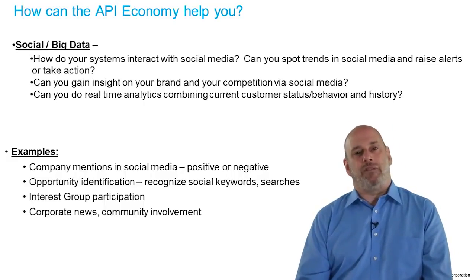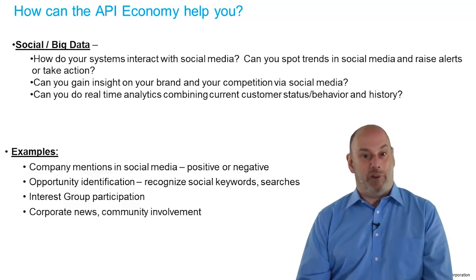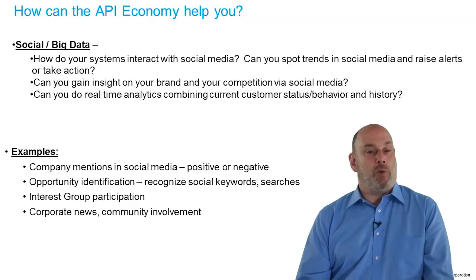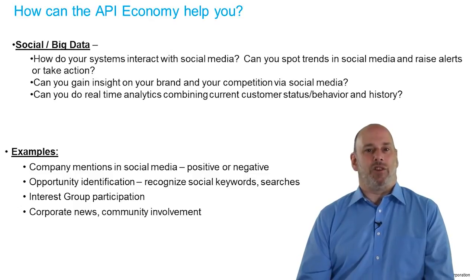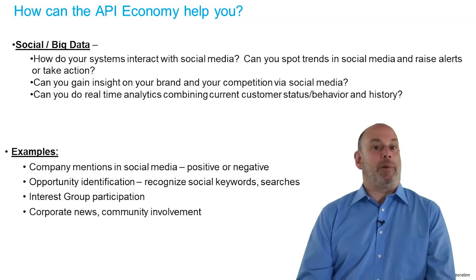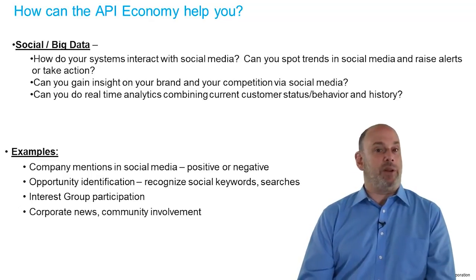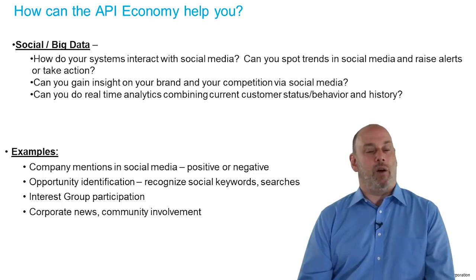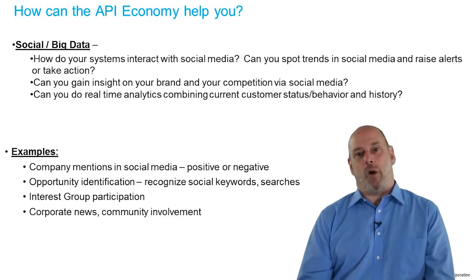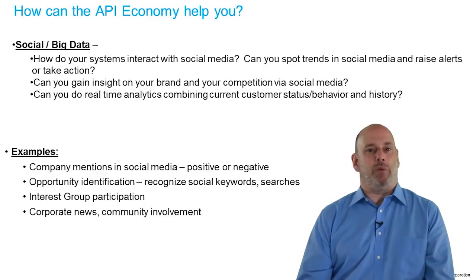For social and big data: if someone mentions your company directly on social media, they might be saying something positive — you want to capture that and retweet it, get that information out there. If they're saying something negative, you want to address that immediately before it spreads. Social APIs are the most common way that people interact with social media — it's not a web or mobile interface, it's through APIs. For opportunity identification, you might notice people talking about particular things, like going on vacation, and if you're a retailer you can sell them something, or a travel company can help them find a rental car or hotel. Participating in interest groups and populating social media with what you're doing as a company is also important.